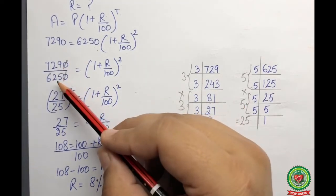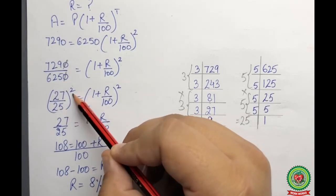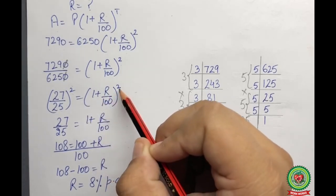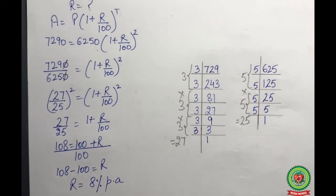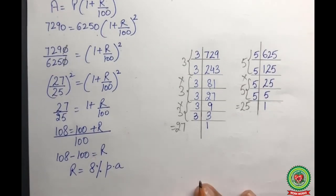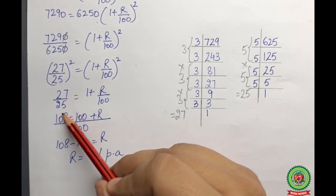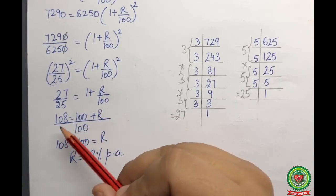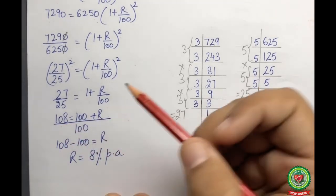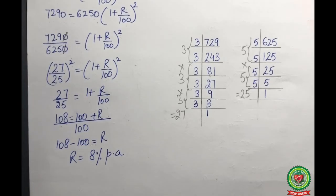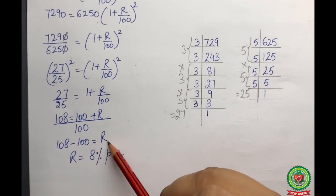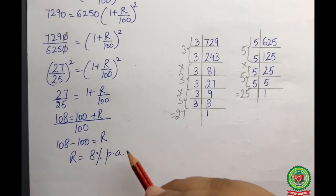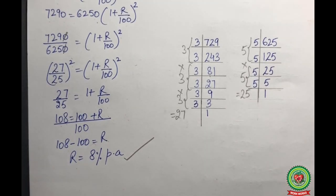We find 729/625 = (27/25)², so (27/25)² = (1 + r/100)². Since the powers are equal, the bases are equal: 27/25 = 1 + r/100. Taking LCM: 108 = 100 + r, so r = 8% per annum. Now you should be clear with this topic. You have a worksheet in your SnapHomework — solve that. Thank you and have a nice day.